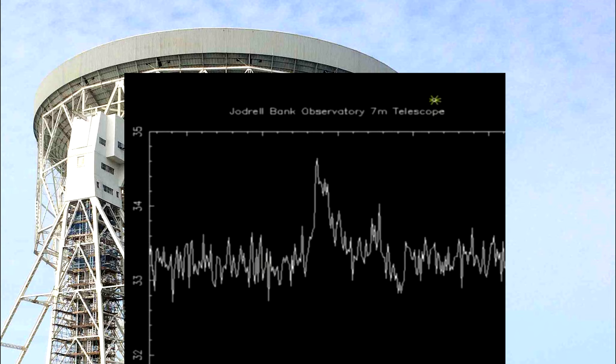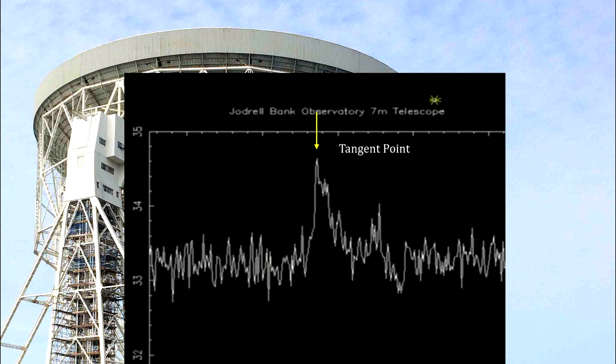In this line of sight reading, we see a number of peaks. Each one represents a cloud. Peaks have different frequencies because the clouds have different radial velocities. The maximum peak is from a cloud whose radial velocity is close to its total orbital velocity.